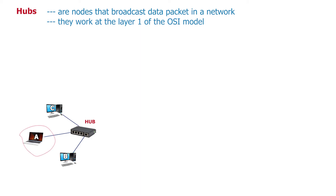This means that if host A sends a packet across this hub, the same packet will be sent to all the other hosts at the same time. Meaning, not only the intended destination will receive that packet. This makes a hub not too intelligent in its operations.